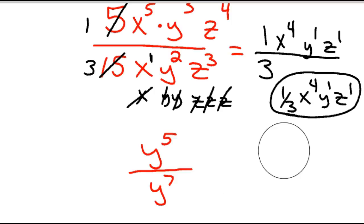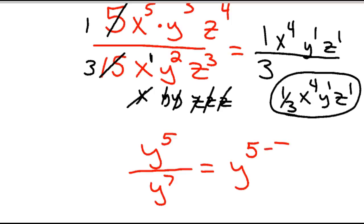Let me show my work. You do this for so many years and it becomes automatic. So y to the 5 minus 7 — well, 5 minus 7 is negative 2. So how do we deal with a negative exponent?